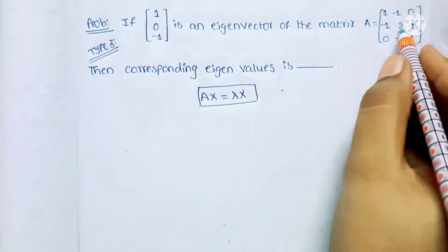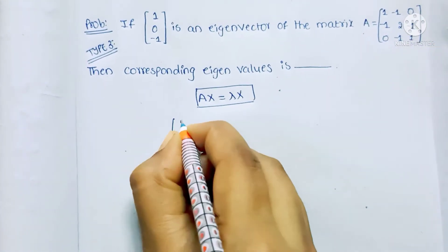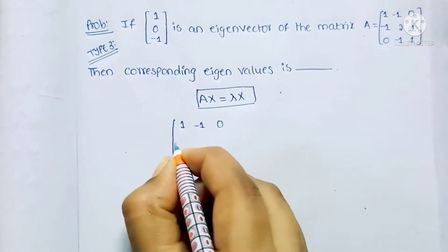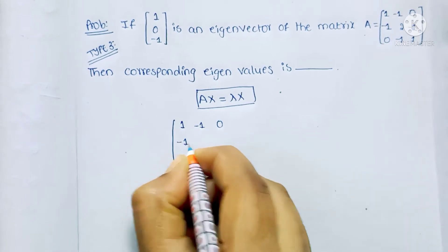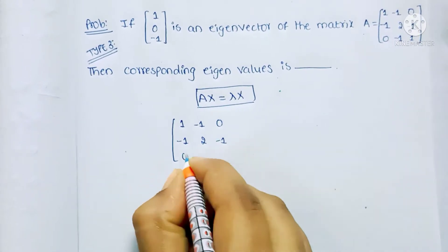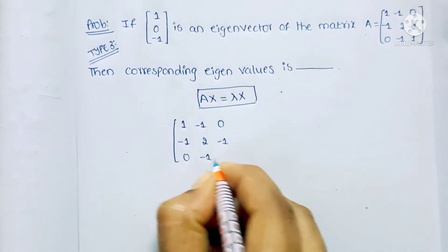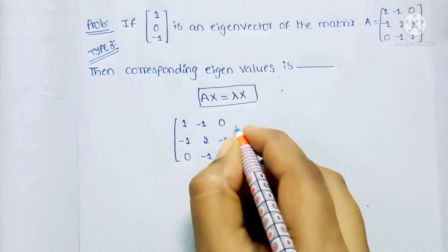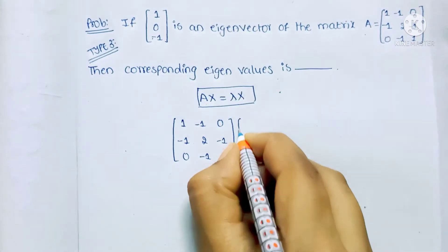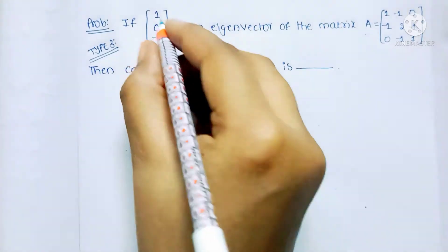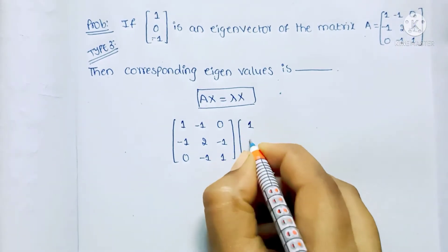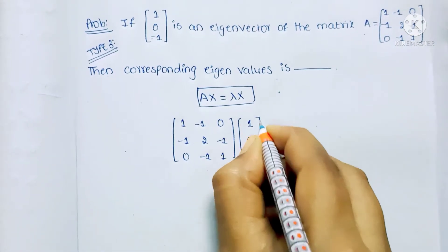Here matrix A is [1, -1, 0; -1, 2, -1; 0, -1, 1] and x̄ is the vector [1, 0, -1], which equals lambda multiplied by x̄ = [1, 0, -1].